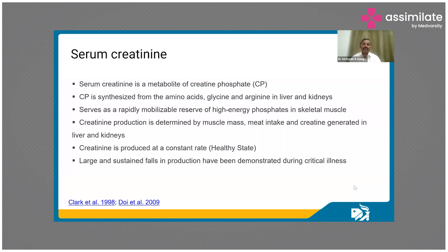What is serum creatinine? We measure it in blood, and it can also be measured in urine. It is a metabolite of arginine and glycine, synthesized in the liver and kidney, and it is a rapidly metabolizable high-energy phosphate in skeletal muscle. It is produced at a constant rate in a healthy person. However, there can be large and sustained falls in production during critical illness — if the patient is critically ill in the ICU, production is reduced and it is no longer constant.